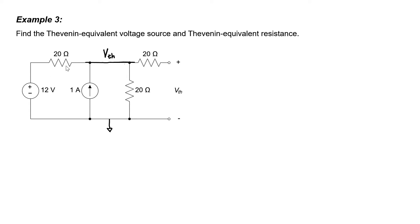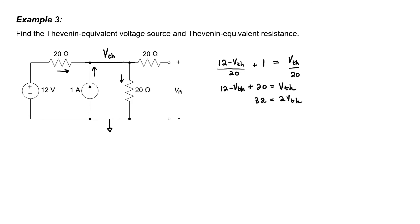Applying Kirchhoff's current law at this node: current flowing in through the 20 ohm resistor is (12 minus VTH) divided by 20 ohms. We also have 1 ampere flowing into the node from the 1 amp source. Current flowing out through the 20 ohm resistor is VTH divided by 20. Solving the equation for VTH and multiplying every term by 20 gives 32 equals 2 times VTH, so the Thevenin voltage is 16 volts.